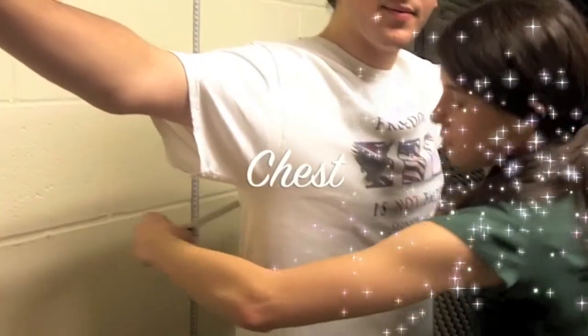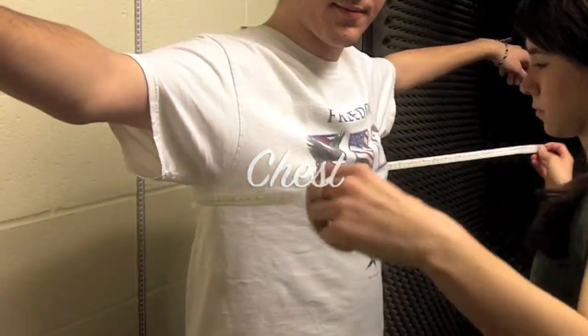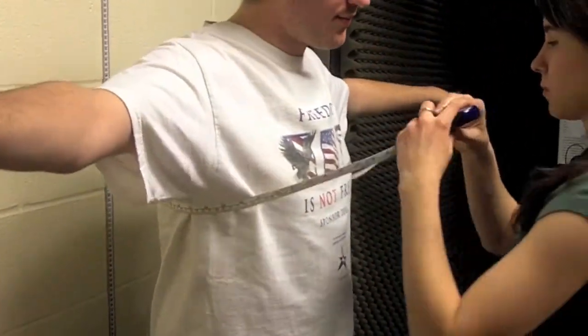How to measure chest circumference: Align looping tailors tape underneath the participant's shoulders. Record the participant's chest circumference in centimeters.